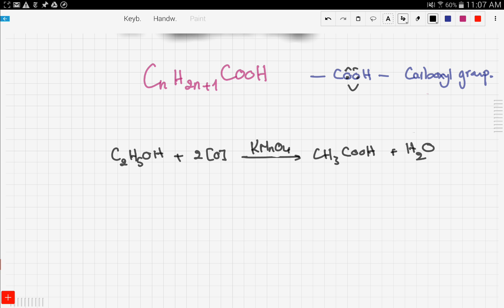So this is how we get carboxylic acids. We're basically oxidizing an alcohol.